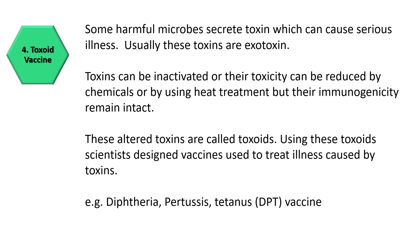Toxoid vaccines are used against harmful microbes that secrete toxins causing serious illness — usually exotoxins. These toxins can be inactivated or have their toxicity reduced by chemicals or heat treatment, while their immunogenicity remains intact. These altered toxins are called toxoids. Using toxoids, scientists design vaccines to treat illnesses caused by toxins. An example is the diphtheria, pertussis, and tetanus (DPT) vaccine.